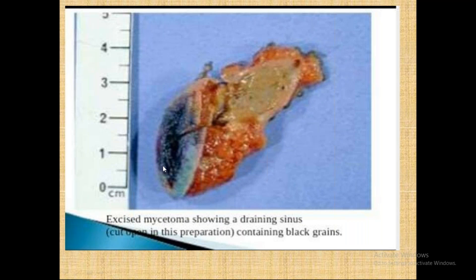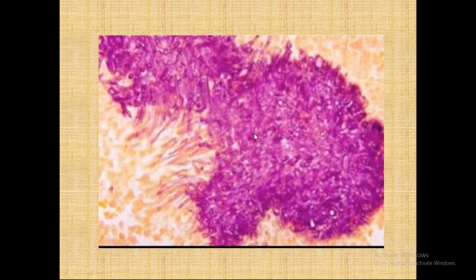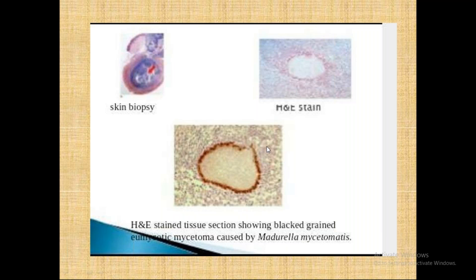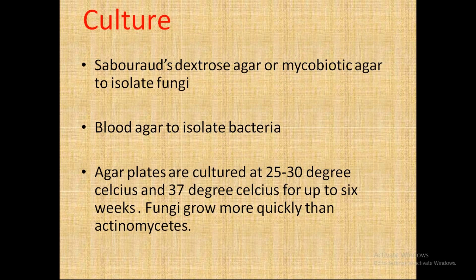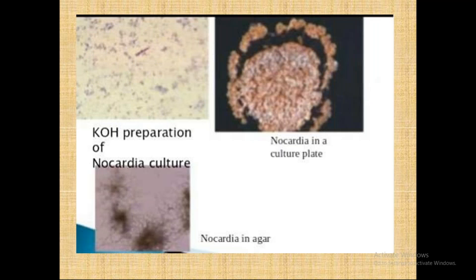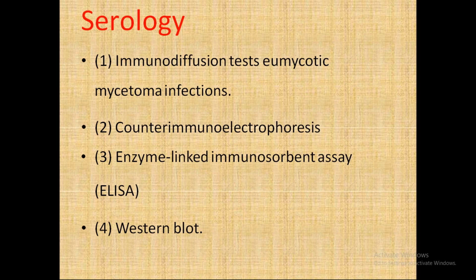The excised mycetoma shows grainy sinuses. Microscopic skin biopsy with H&E stain shows black eumycotic mycetoma caused by Madurella mycetomatis. Culture is performed on Sabouraud's dextrose agar twice weekly and blood agar twice weekly for bacteria. Agar plates are cultured at 25–30°C and 37°C for up to 6 weeks. Fungi grow more quickly than actinomycetes. Serology includes immunodiffusion test for eumycotic mycetoma infections, counter immunoelectrophoresis, and enzyme-linked immunosorbent assay (ELISA).